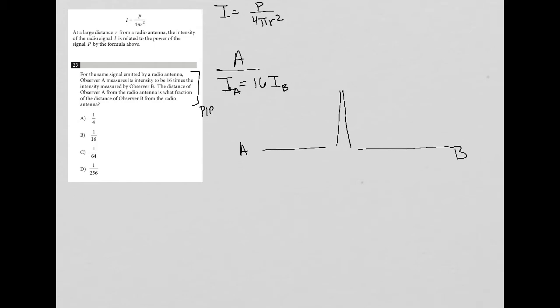So if answer choice A were correct, now I'm using a plug-in answers strategy, because this question is practically asking for the value of R, because R represents the distance. So if the distance from B were, I don't know, 16, then based upon choice A being one-fourth of that, that would make this four, so R equals four, R equals 16. The question is, would we end up with this type of scenario?